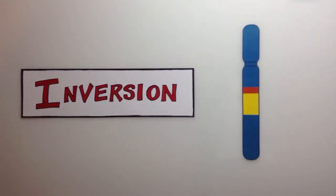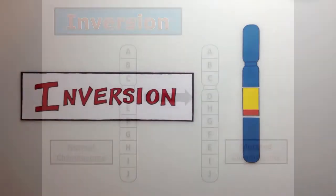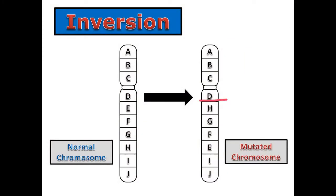During an inversion, a section of the chromosome is accidentally flipped before it is reinserted. As a result of the inversion, these segments along the chromosome appear backwards. That's because this entire section has been flipped upside down.